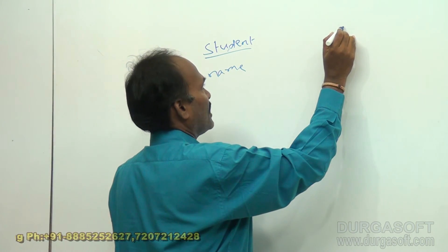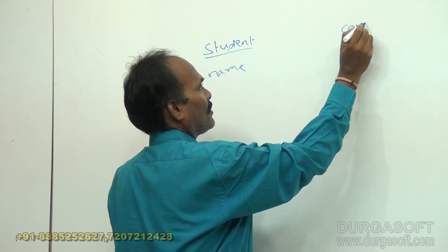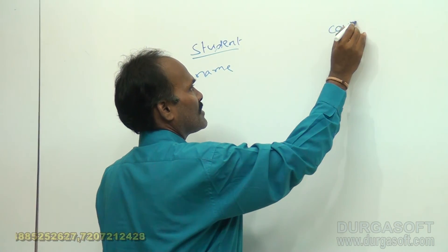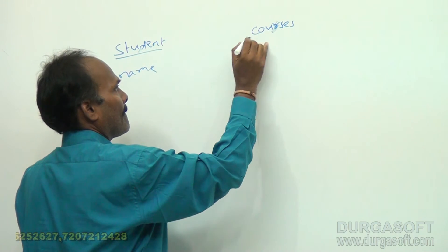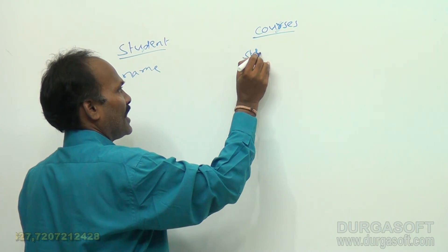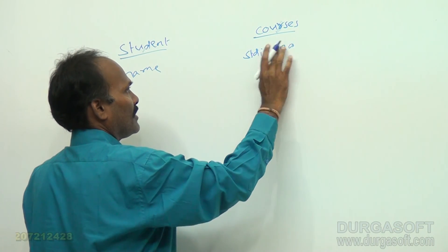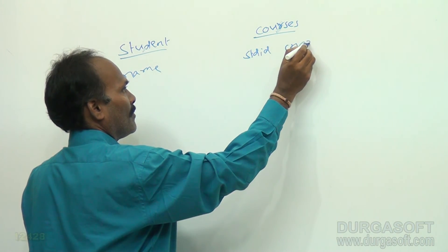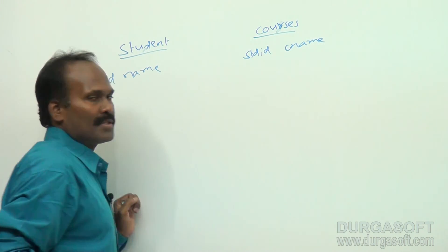Along with the student table, I have another table called courses. This table also has a student ID field and a course name field.